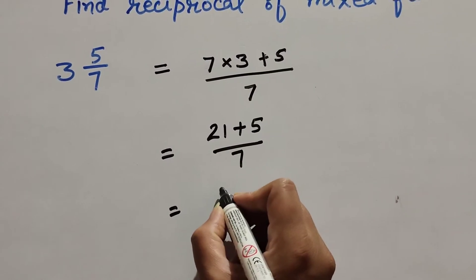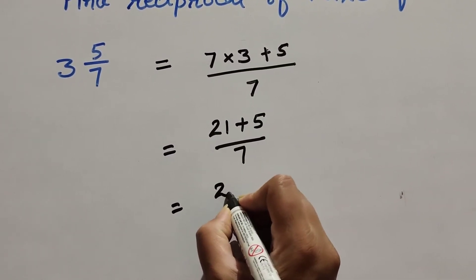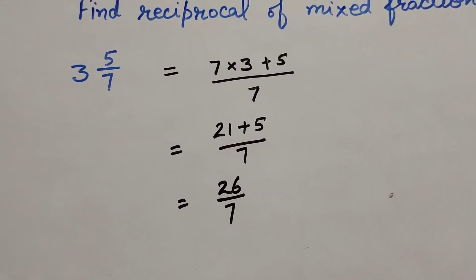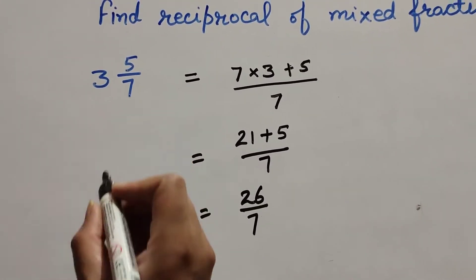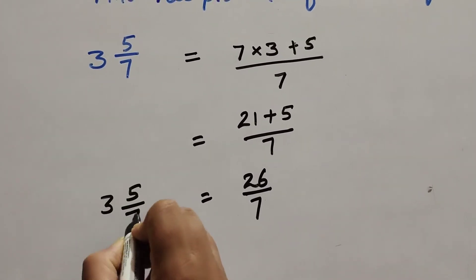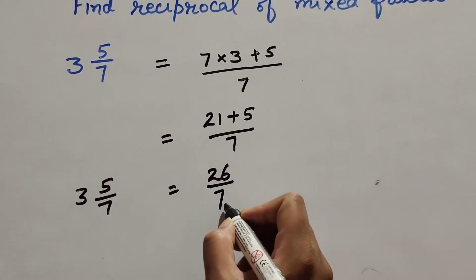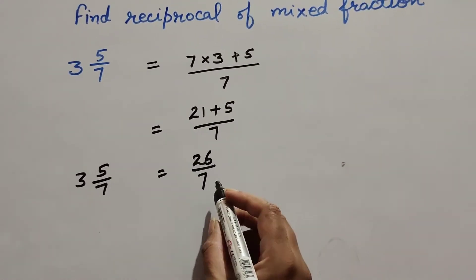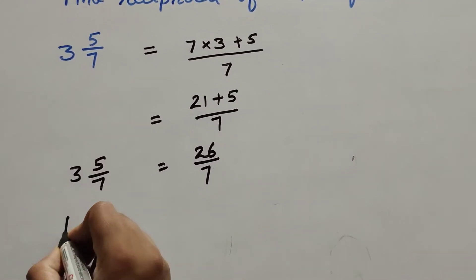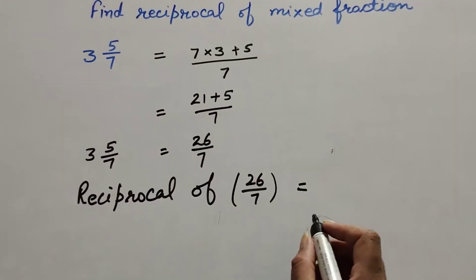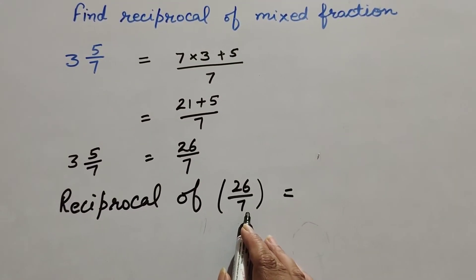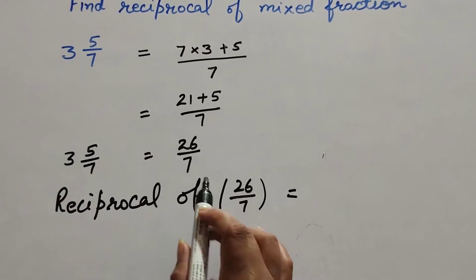21 plus 5 equals 26, so the mixed fraction 3 and 5/7 is equal to 26 upon 7. Now we find the reciprocal of 26/7. To find the reciprocal, we simply interchange the numerator and denominator.